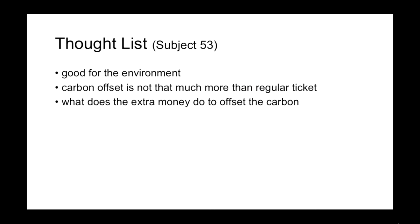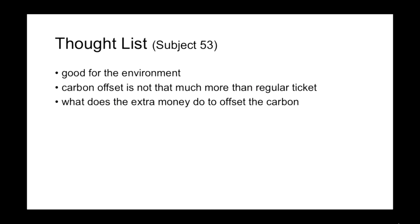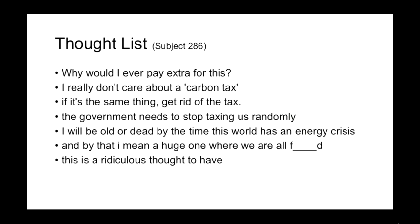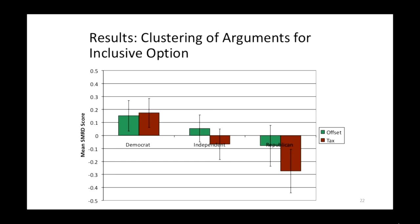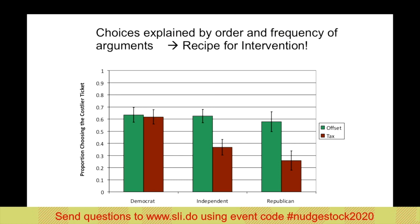Can we explain these differences in choice uptake by query theory processes? We can code the arguments people type before deciding — whether they support the inclusive or the other option — and count arguments for the inclusive option. We can also assess whether arguments cluster or are randomly interspersed, and whether the cluster predicts the number of arguments for the first query option. The answer is yes: there is clustering, the cluster mirrors the choice pattern, and combining those two predictors mediates the choice patterns in a mediation analysis.